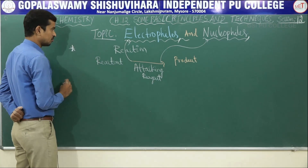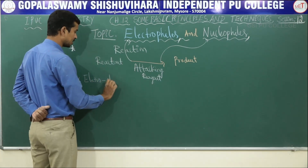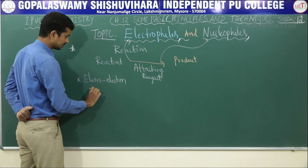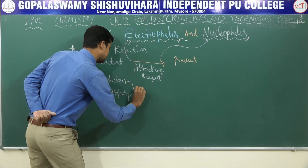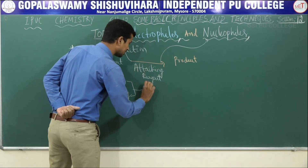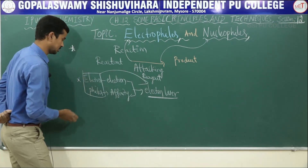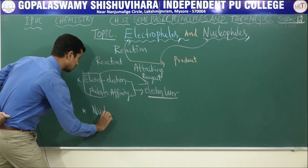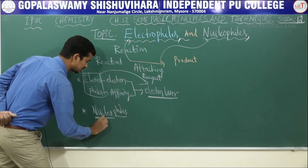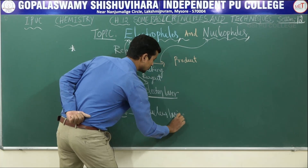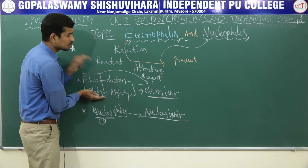What are the electrophiles? Electro means electron, and 'phile' means affinity. Electron affinity — attracted towards the electron. Electrophiles is an electron loving species, or electron lover. Nucleophile — 'nucleo' means towards the nucleus, and the nucleus has positive charge. Nucleophile means a nucleus lover. Electrophiles means an electron loving species, or electron lover.